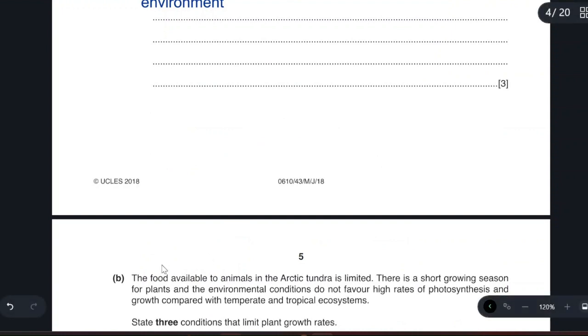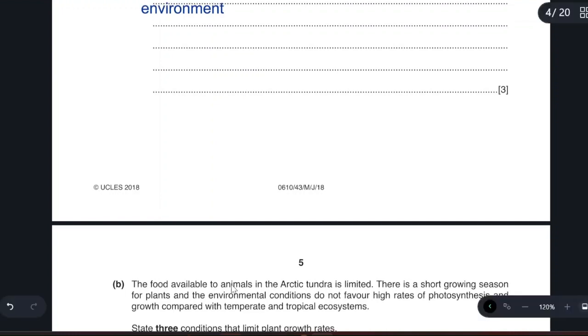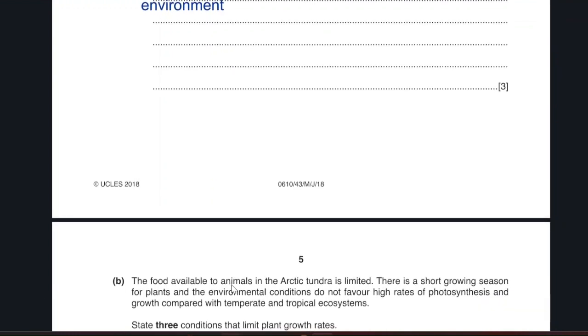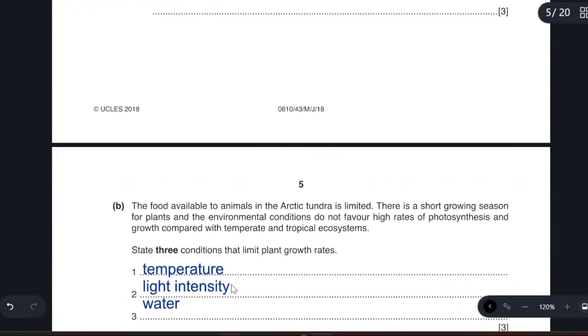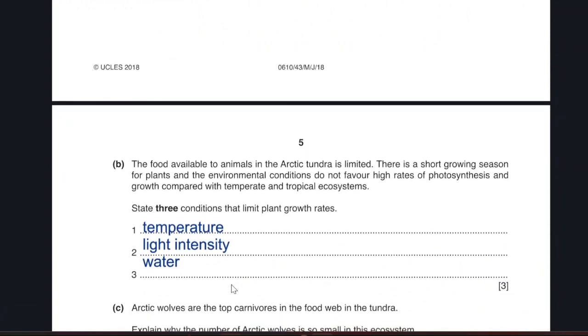The next question. Food is available to animals in the Arctic tundra. The food available is limited. There is a short growing season for plants and environmental conditions do not favor high rates of photosynthesis. State three conditions that limit the plant growth rates. The factors that allows the plant to grow. If they are not there, the plant will not grow. Such as temperature, light intensity, and water supply. Minerals in the soil.